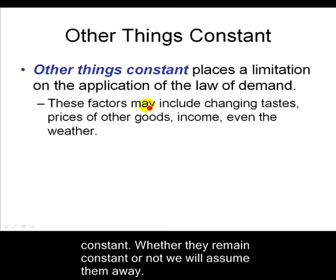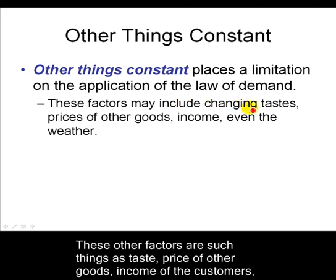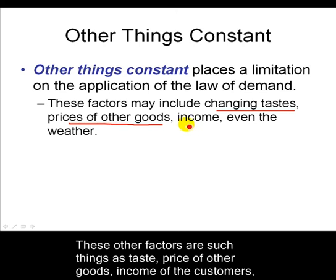These factors that we're assuming away to draw the demand curve include changing tastes — so people don't want your product anymore — or maybe the price of other goods. Maybe some other good that's competing, a substitute, or a complement to your good, goes up or down in price, and that's going to affect your demand curve. If people's income goes up or down, that's also going to affect your demand curve.